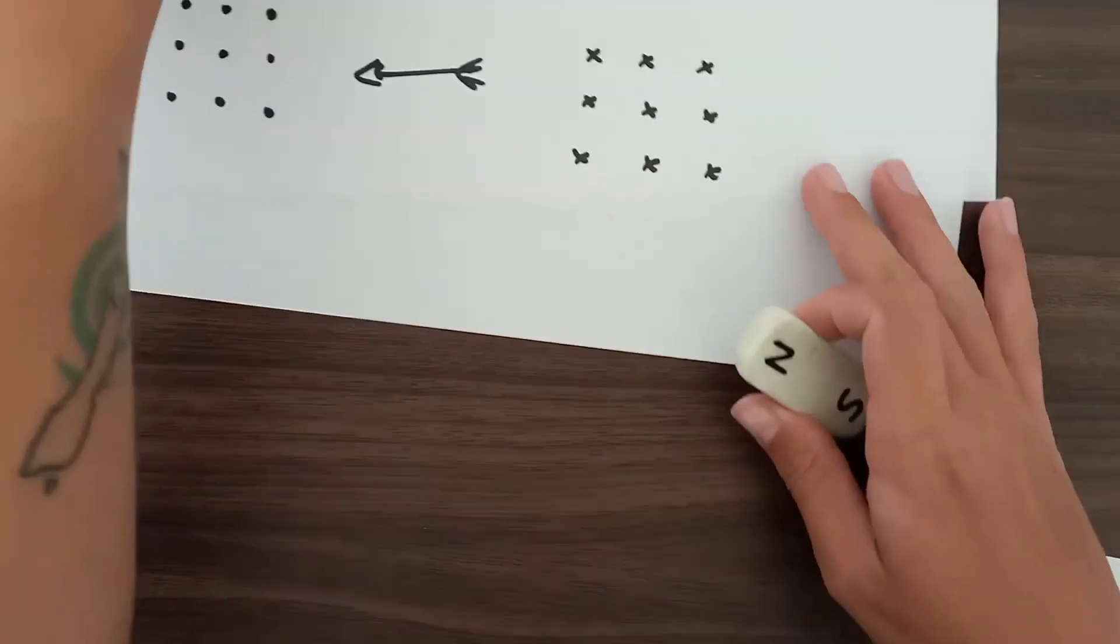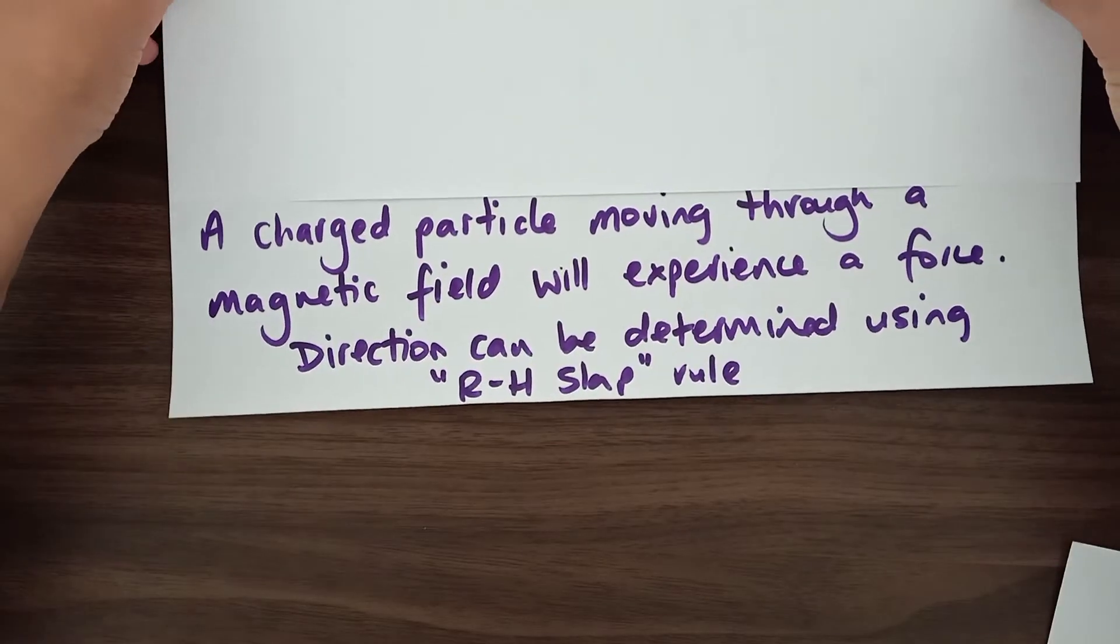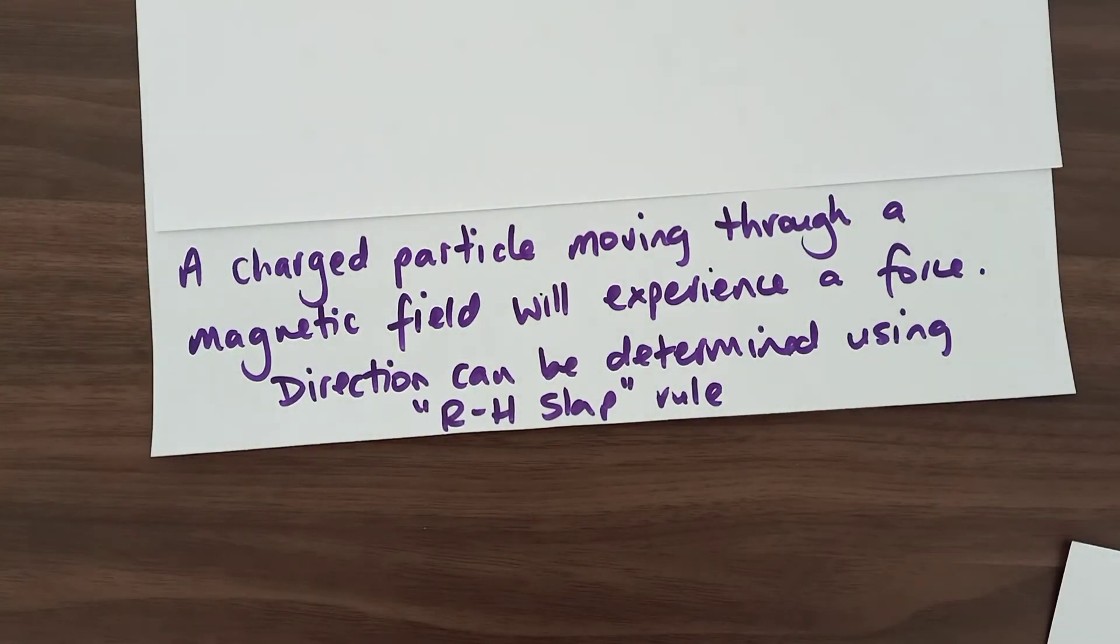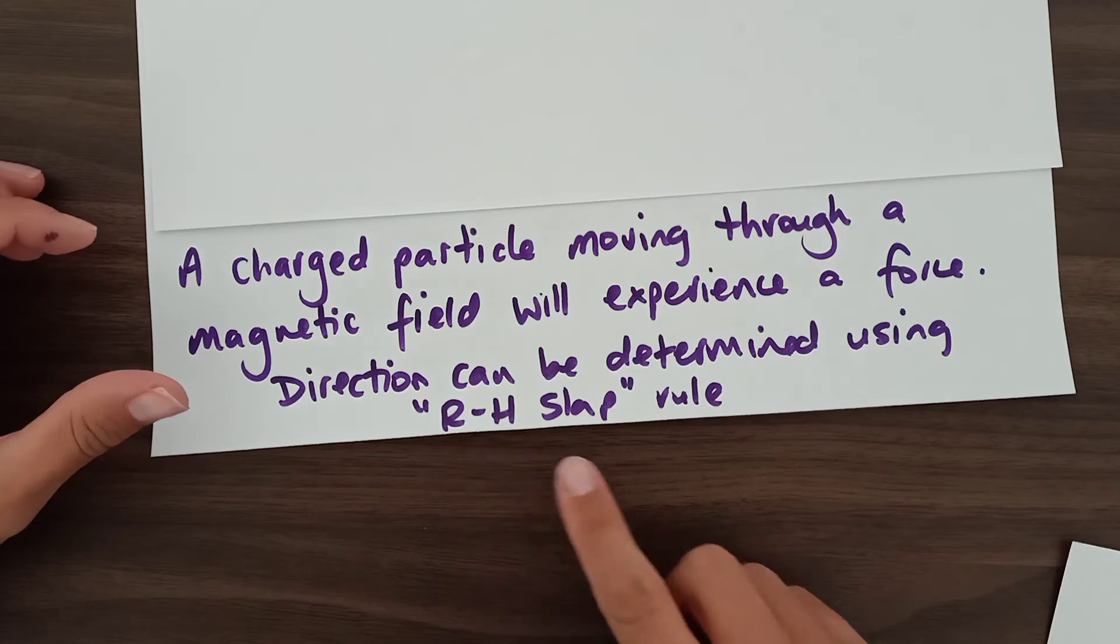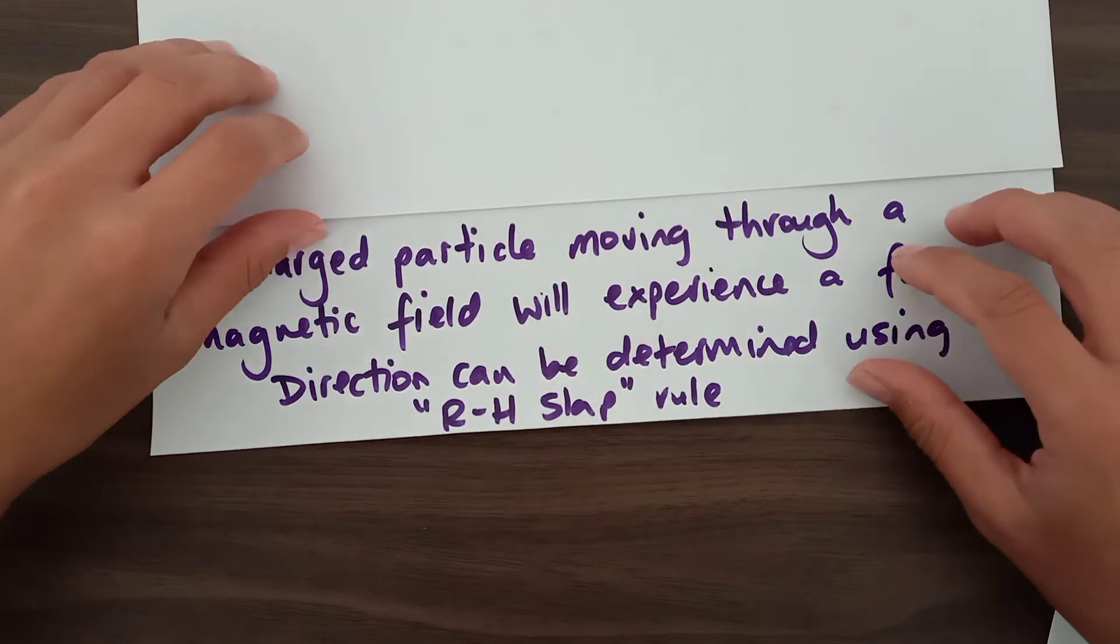Now, what does that have to do with radiation? Glad you asked. When you have any sort of charged particle that's moving through a magnetic field, it does experience force. And we can use that information to help us. And there's always a trend with this. You will learn this later on when we do electricity and electromagnetism. But you can determine what way a particle will move and what direction that force will be in. And there's a little bit of a rule called a right-hand slap rule that can help you determine that.